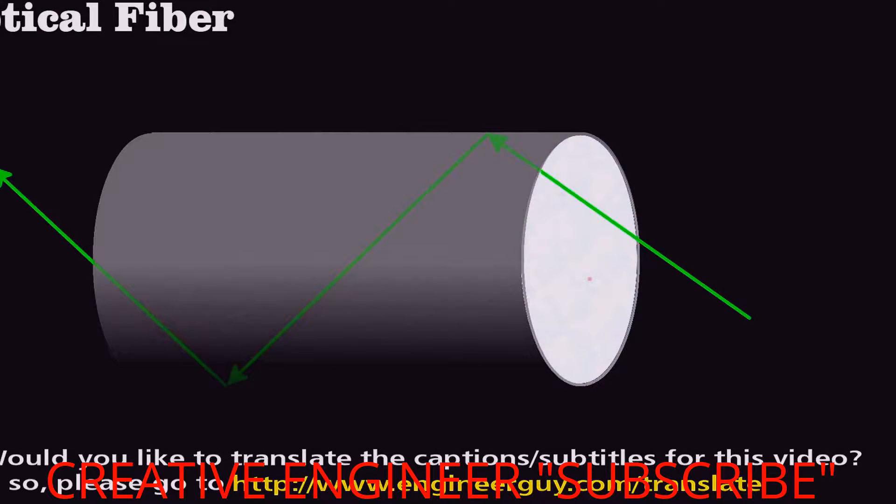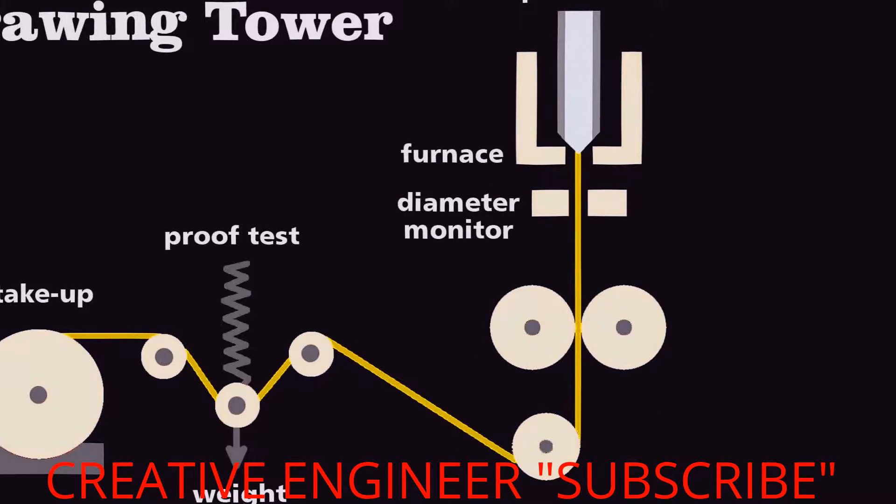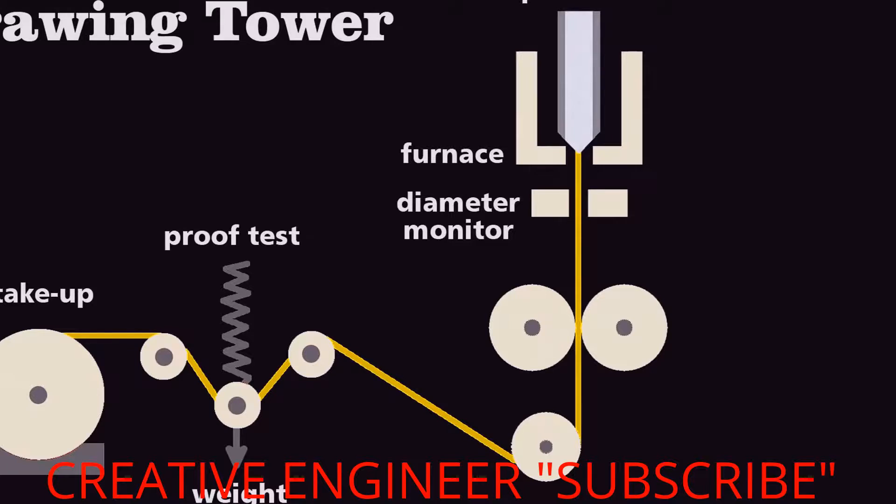To make such a long, thin piece of glass, engineers heat a large glass preform. Its center is the pure core glass, and the outside the cladding. They then draw or pull a fiber by winding the melt onto a wheel at speeds up to 1,600 meters per second.